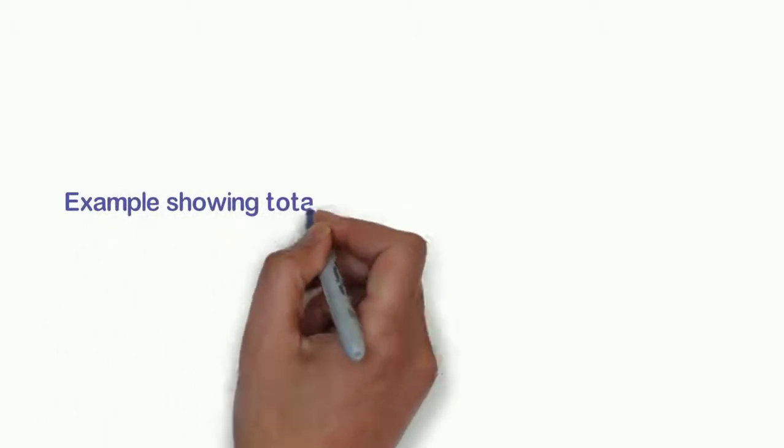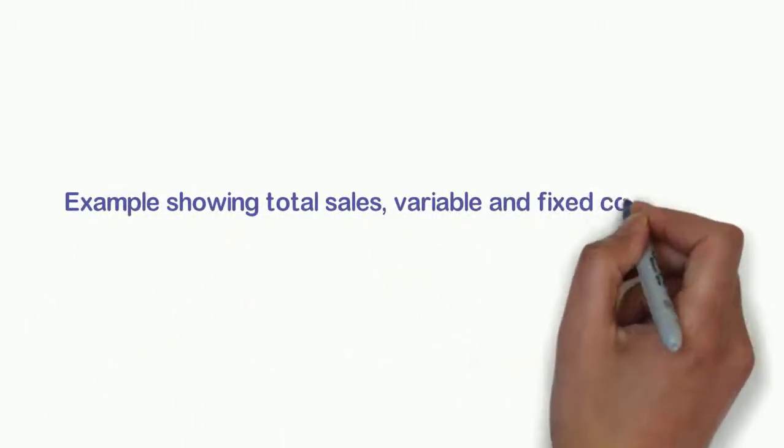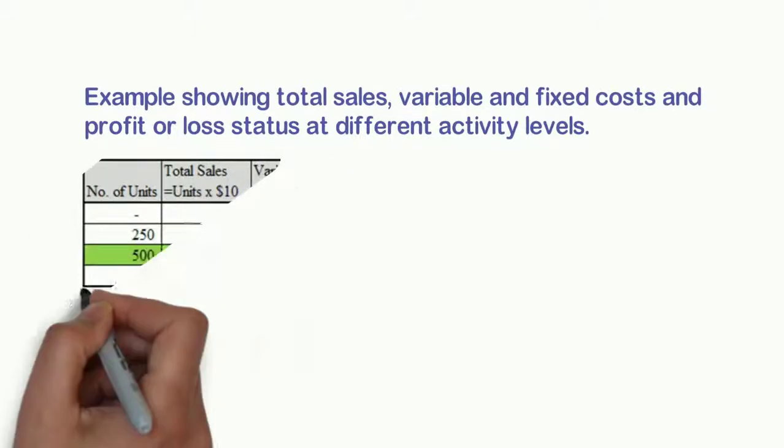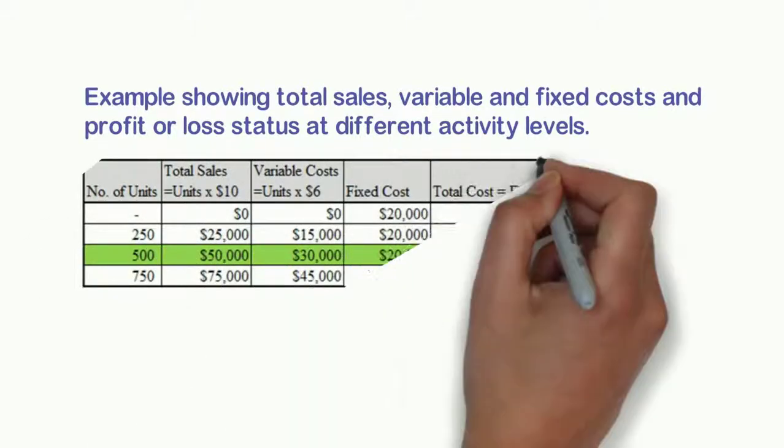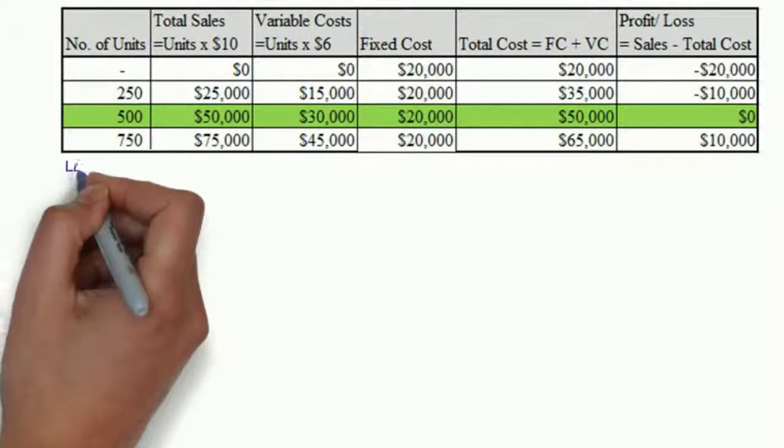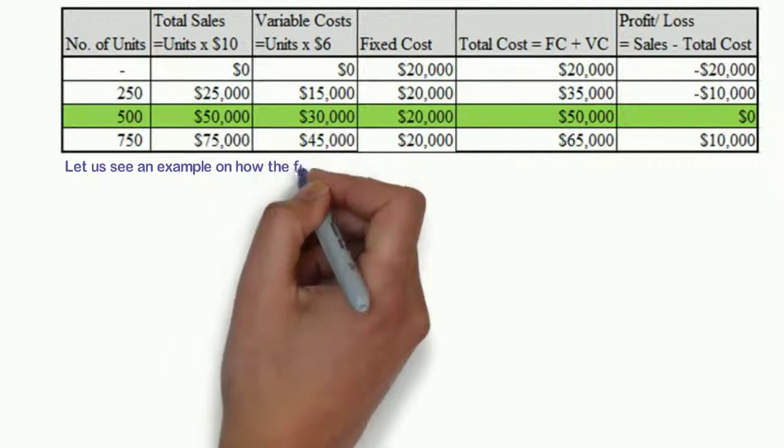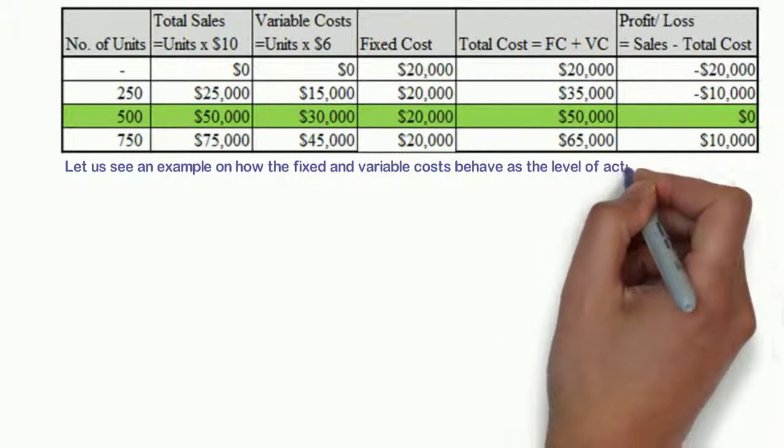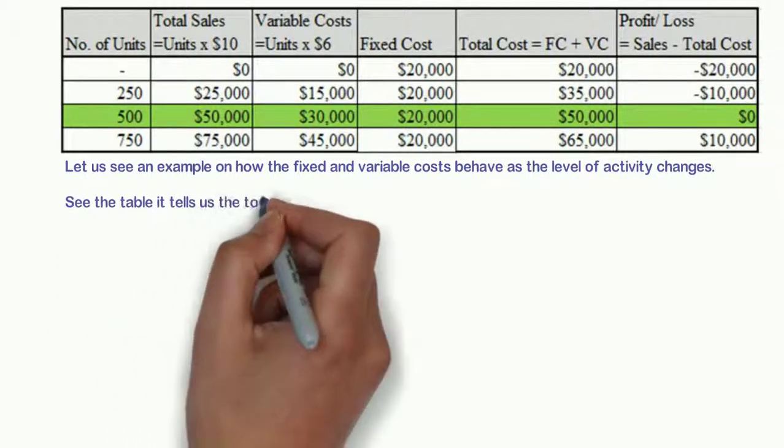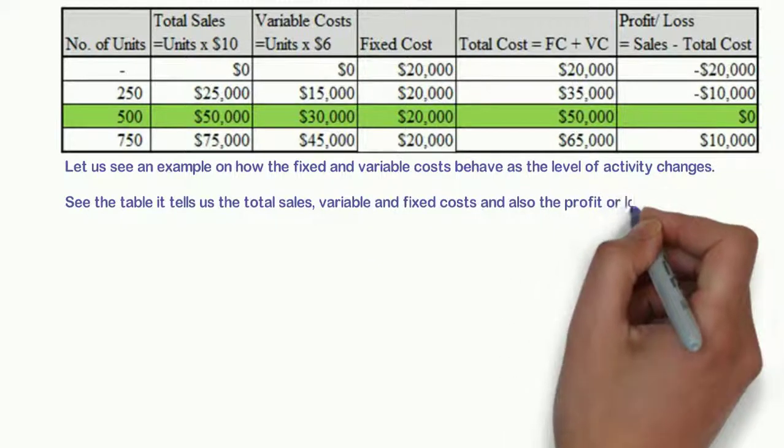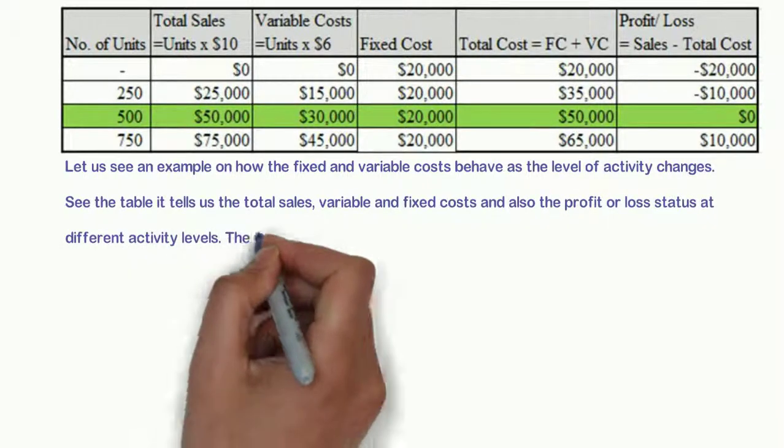Examples showing total sales, variable and fixed costs, and profit or loss status at different activity levels. Let us see an example on how the fixed and variable costs behave as the level of activity changes. See the table - it tells us the total sales, variable and fixed costs, and also the profit or loss status at different activity levels.